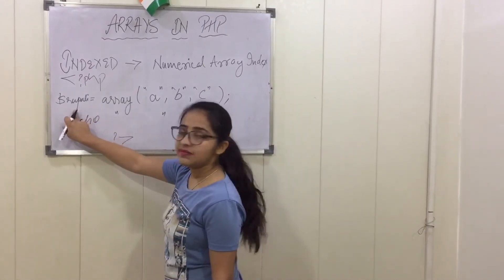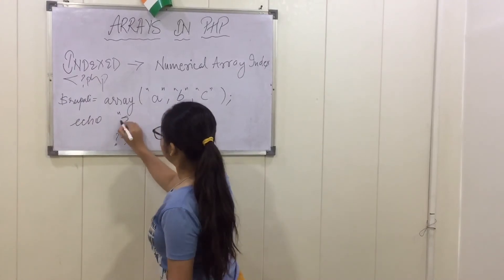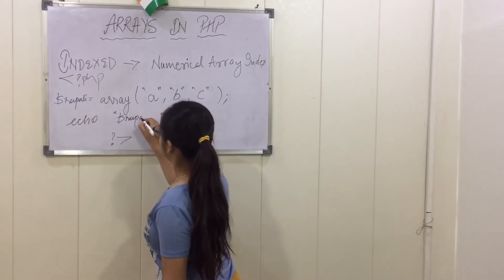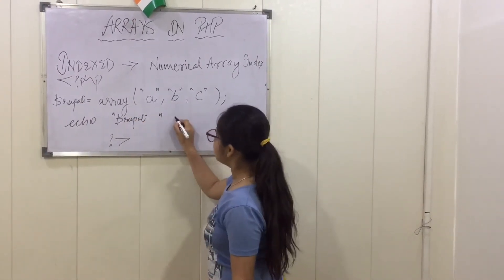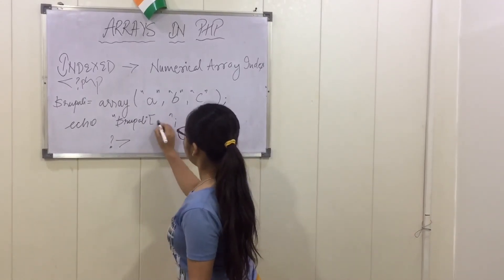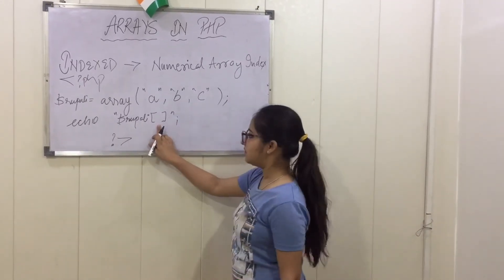In double quotes we will pass the array to be performed. Suppose my array name is $Rupali, and then semicolon after the echo. So in these quotes we will pass the array.